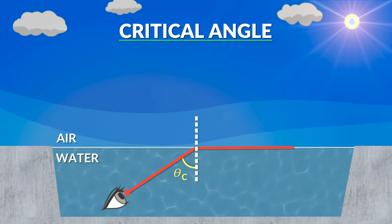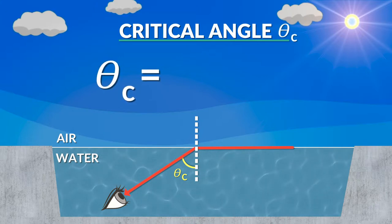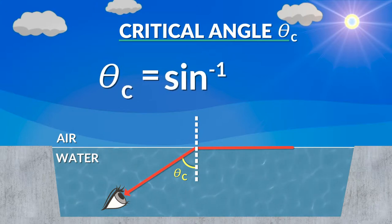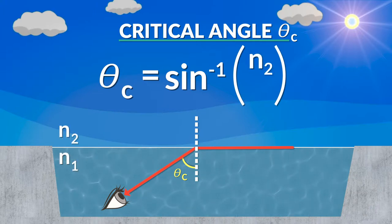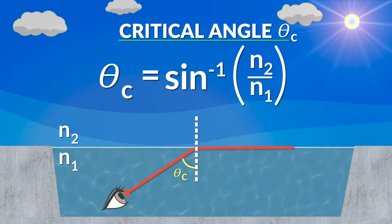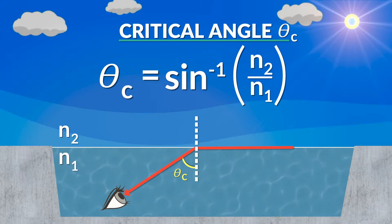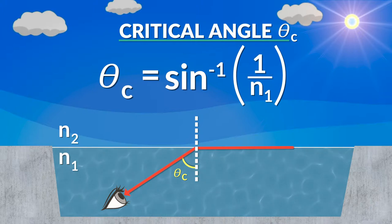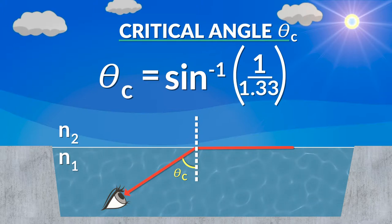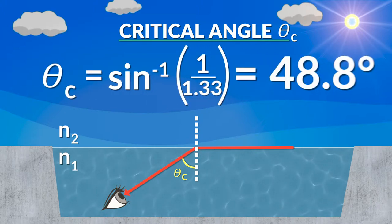In this case, as the ray of light passes from a less dense medium to a more dense medium, the critical angle can be found mathematically by taking the sine inverse of the index of refraction n₂ divided by the index of refraction n₁, when n₁ is greater than n₂. In this case, it will be the sine inverse of the index of refraction of air, 1.00, divided by the index of refraction of water, 1.33, giving us a critical angle of 48.8 degrees.